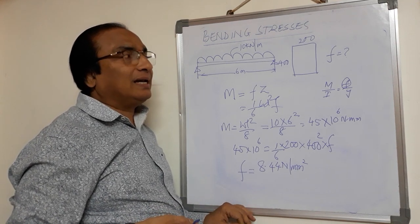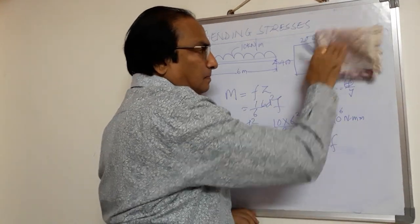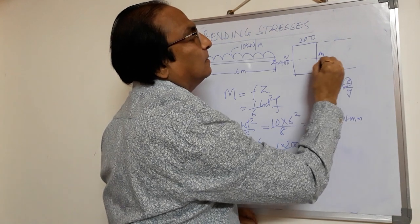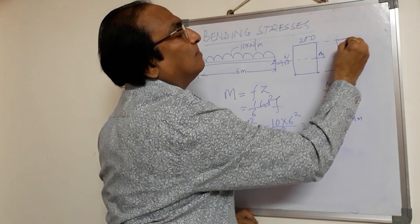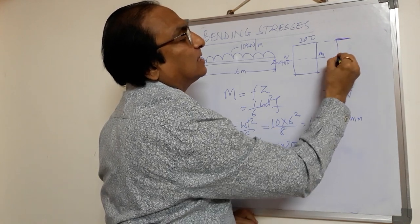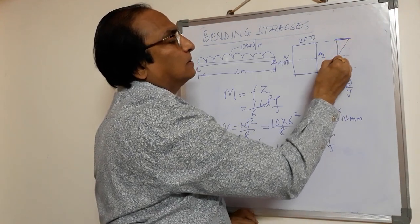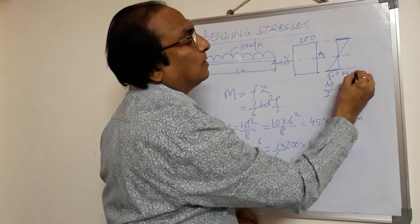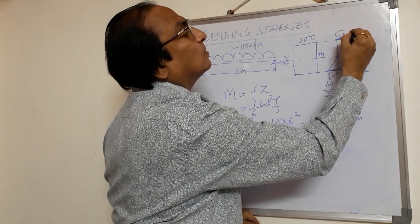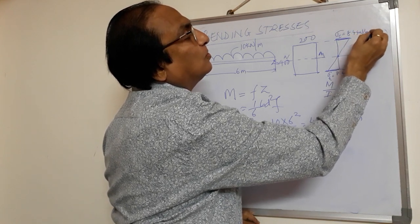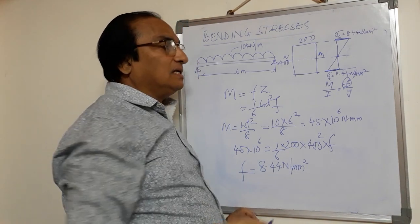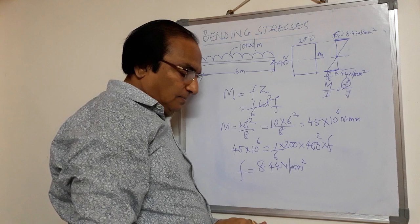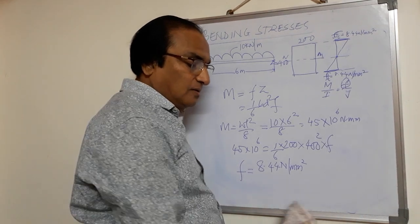It is a rectangular section, so the neutral axis will be at the center. If you draw the bending stress diagram, maximum compressive stress is at the top and maximum tensile stress is at the bottom, with stress zero at the neutral axis. The maximum tensile stress at the bottom is 8.44 N/mm² and the compressive stress is also 8.44 N/mm². Both σ_C and σ_T are equal here. This is a simple problem of drawing the bending stress diagram for a rectangular beam carrying UDL.